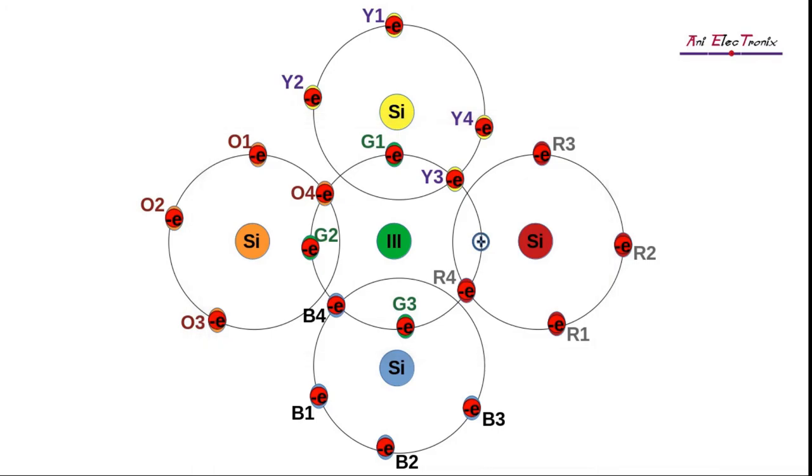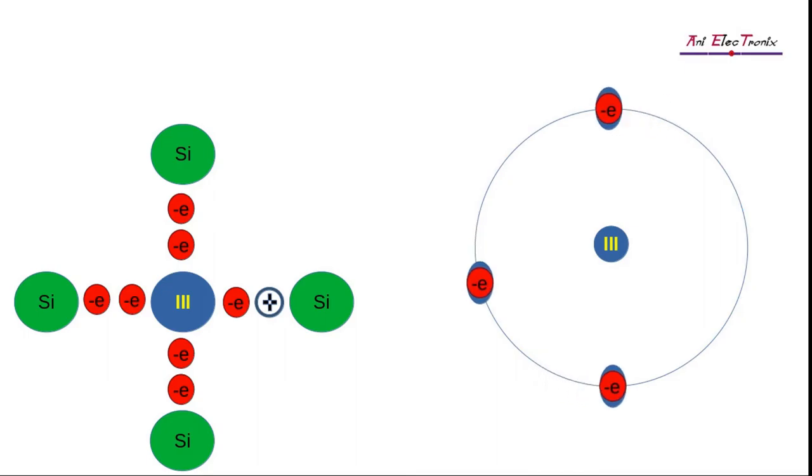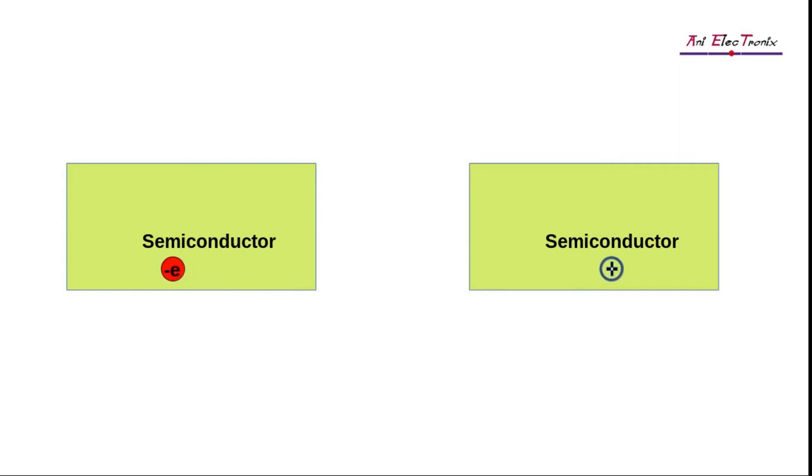If we dope a pure silicon crystal with trivalent atoms, the trivalent atom appears in the center and is surrounded by all four silicon atoms. Each silicon atom shares a valence electron in the trivalent atom. Therefore, there are seven electrons in the valence orbit. In another word, a hole appears in the valence orbit of the trivalent atom.